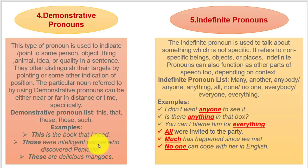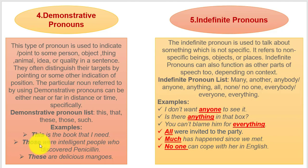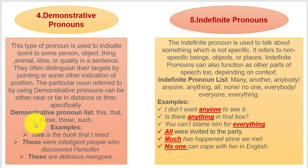'Those' refers to people who are far away from you with respect to time. If they had been close to you in time, you would use 'these': 'These are intelligent people who discovered penicillin.' And 'These are delicious mangoes' means the mangoes are plural and close to you. In summary: singular and close — use 'this'; plural and close — use 'these'; plural and far — use 'those'; singular and far — use 'that'.